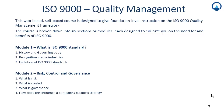The course has been broken down into six sections or modules, each designed to educate you on the need for and the benefits of ISO 9000. Module 1 will be an introduction module which will tell us what the standard is about, what the history and the governing body is, what is the standard recognition across industries and how this standard has been evolved.